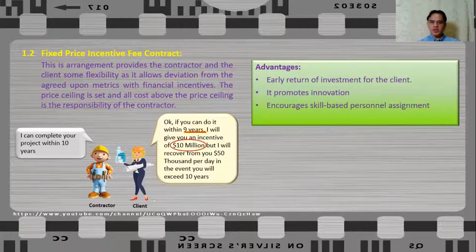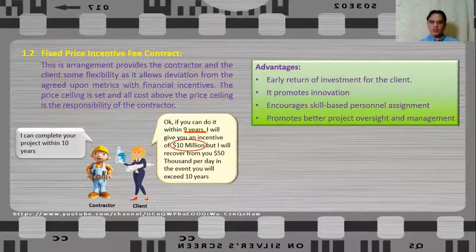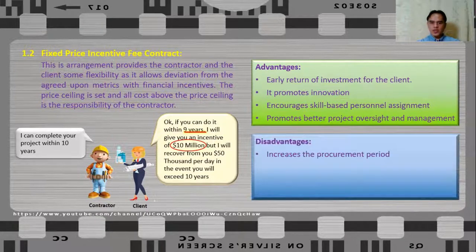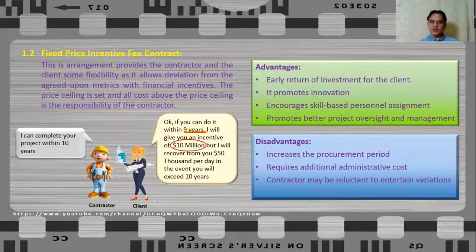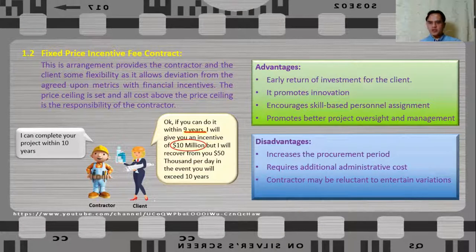The advantages of fixed price incentive fee contract include: it may result in early return of investment for the client; it promotes innovation; it encourages skill-based personnel assignment; and promotes better project oversight and management. The disadvantages are: it will increase the procurement period, because extra time is needed to negotiate and agree on the metrics and incentives; it requires additional administrative costs; contractors may be reluctant to entertain variations as these may prolong the project; and it increases the risk of dispute.